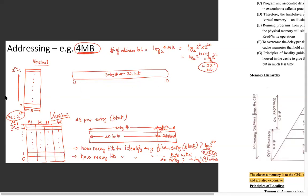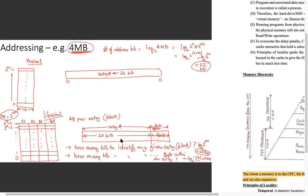If you organize it in version one as a single column where each entry is one byte in a byte-addressable scheme, you have addresses starting from zero all the way to 2^22 minus one — the number of entries equals the number of bytes, and the 22 address bits map directly to those entries.